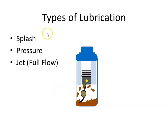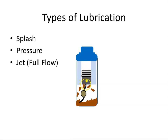I'd like to consider three types of lubrication. The first type we'll look at is splash type, and this is a piston engine aircraft. Here's the piston, here's the conrod, and at the bottom of the conrod we have this rod dipper.